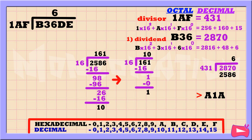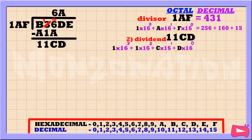So 1AF goes into B36 6 times. Then 6 times 1AF is A1A. Now let's subtract. 6 minus A cannot be, so let's borrow from 3 — 3 becomes 2. Borrow 16. 16 plus 6 is 22, minus A is C. Next column: 2 minus 1 is 1. Then B minus A is 1. Bring down D. 11CD is our second dividend.